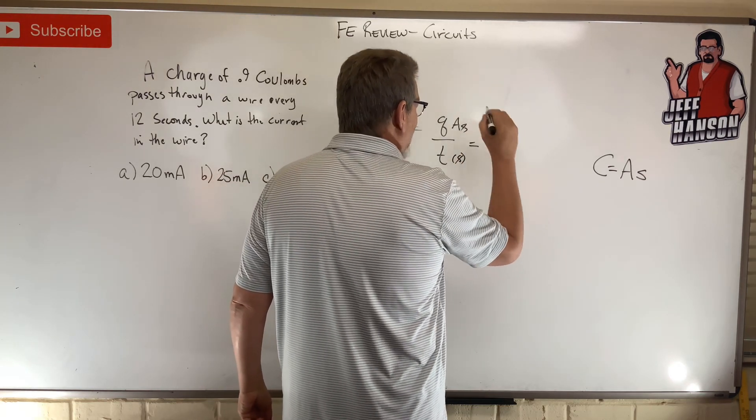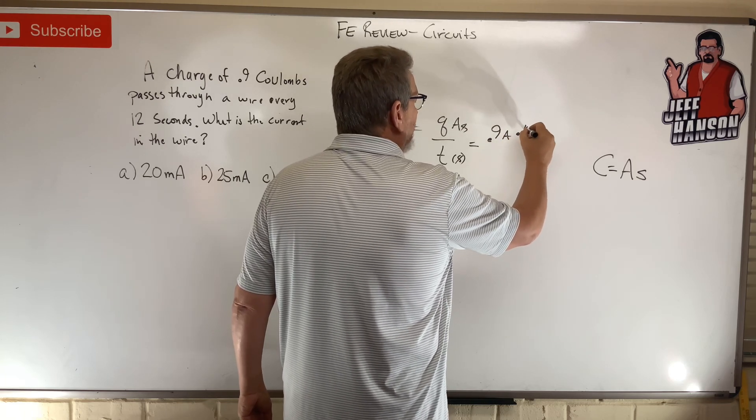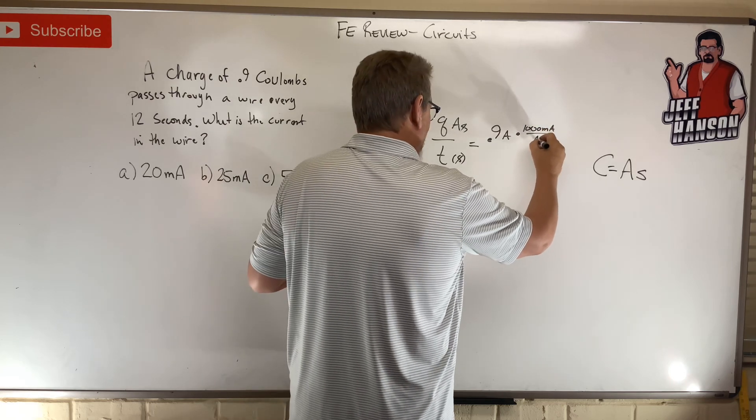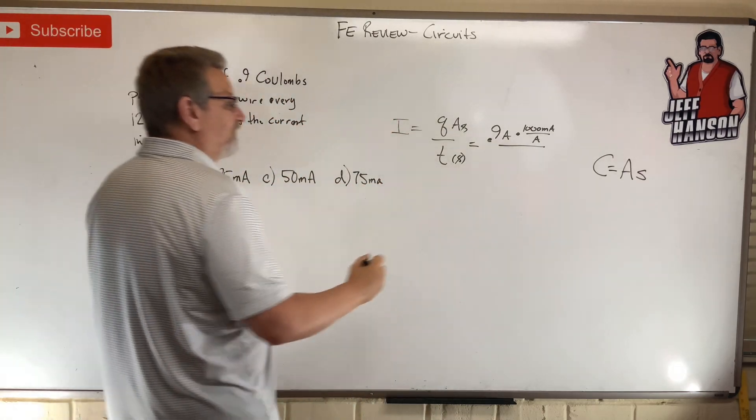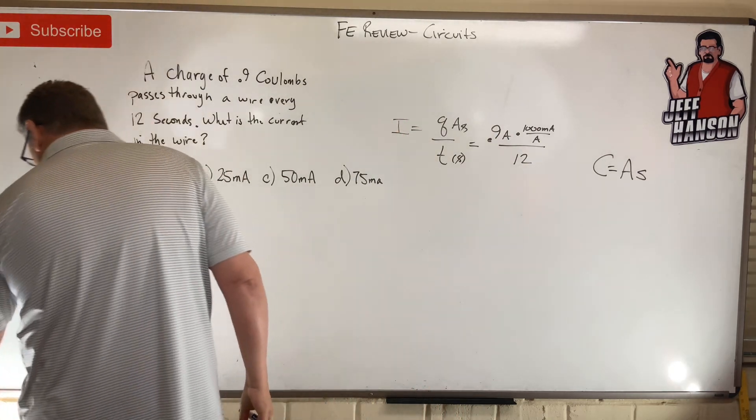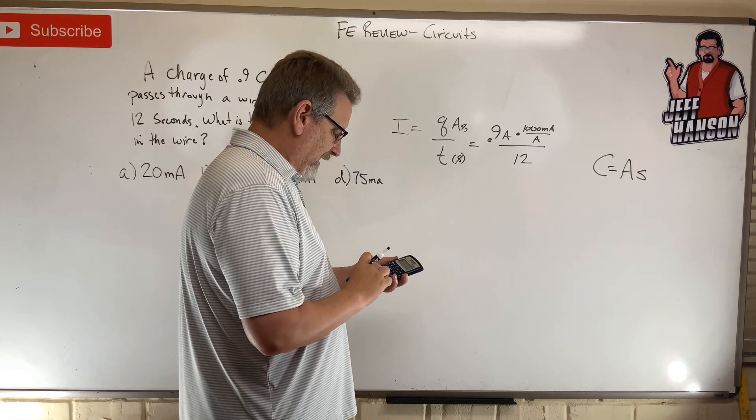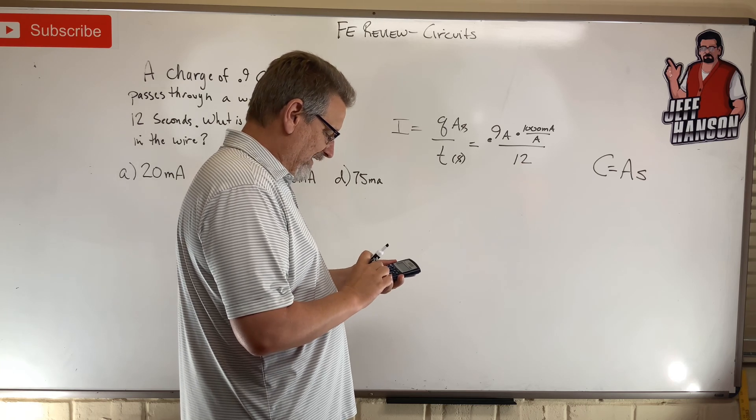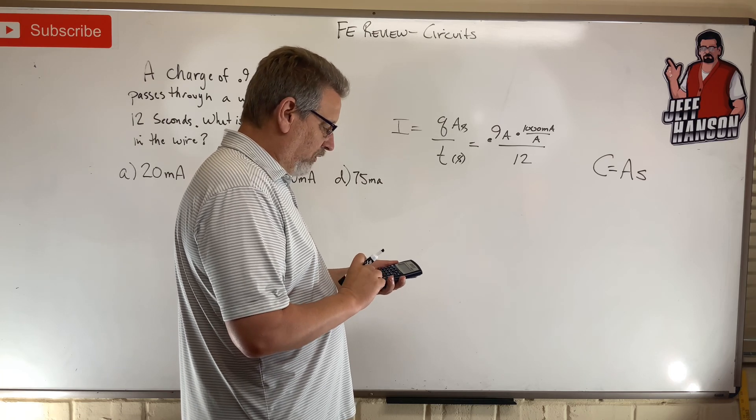So we're going to do 0.9. Now that's amps, so let's do this times 1,000 milliamps over 1 amp, divided all that by the time, and it says 12 seconds is the time. So let's go to the calculator. Here we go: 0.9 times 1,000 equals, divided by 12 equals... bam!